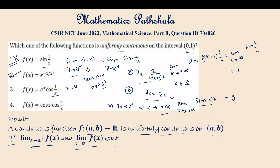Similar to what we did for option 1, for option 3 we take two paths: x_k = 1/(2kπ) and x_k = 2/((2k+1)π). Checking the limit of f(x) along these two paths shows that the limit as x → 0⁺ does not exist. Therefore f(x) = cos(1/x) is not uniformly continuous on (0, 1).